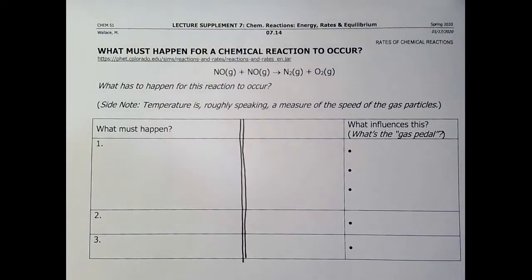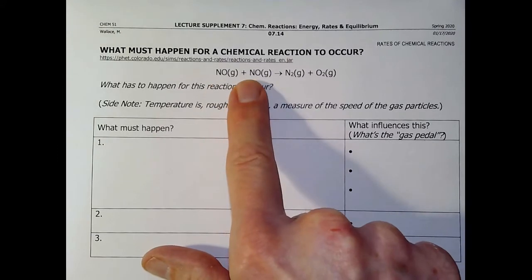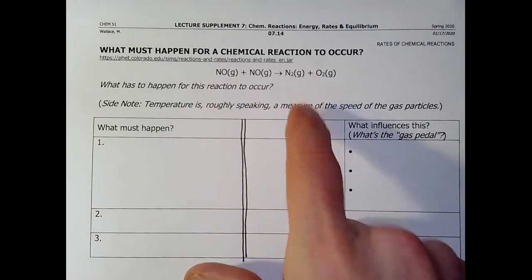All right folks, we're at the top of page 7.14. We're going to completely switch gears here for the next few pages. So I want to think about this chemical reaction, nitrogen monoxide reacting with nitrogen monoxide to produce nitrogen gas and O2 gas.